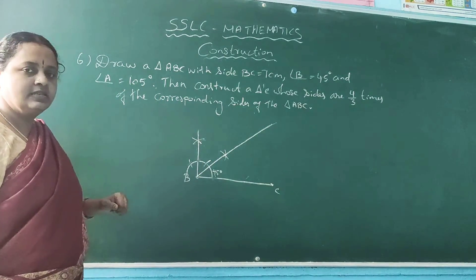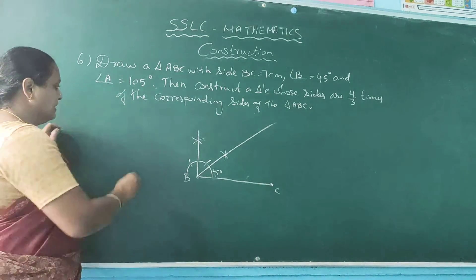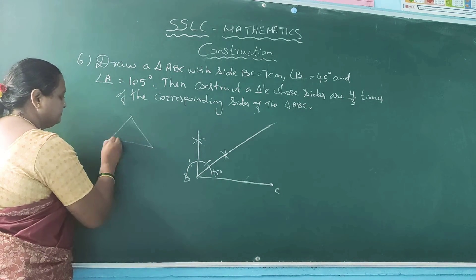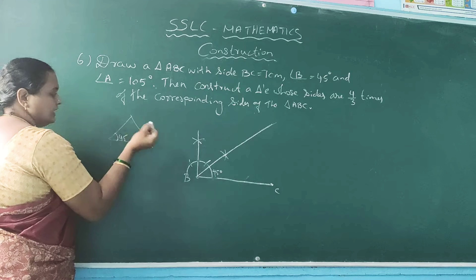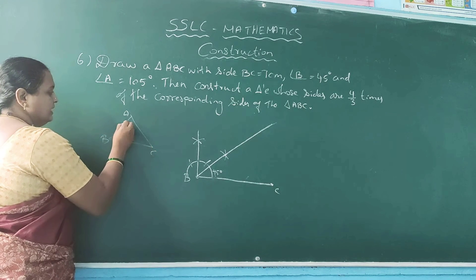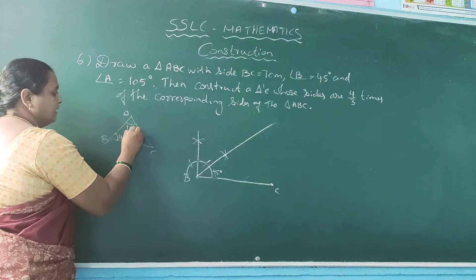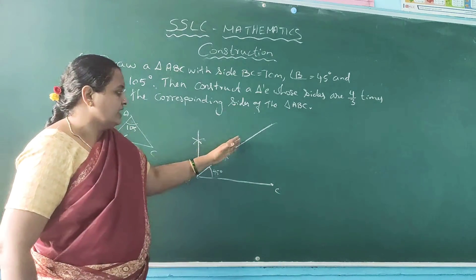Next, angle A is 105. See in a triangle, this is 45 degree. This is A, B, C. Here they have given 105, but we don't know the point where A will come.